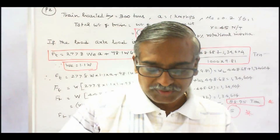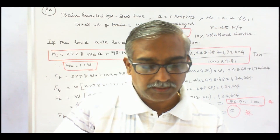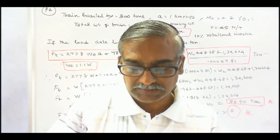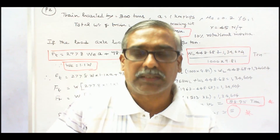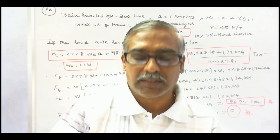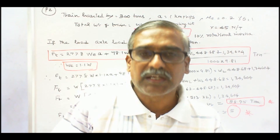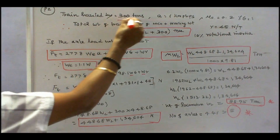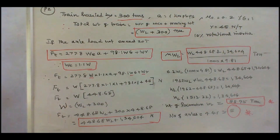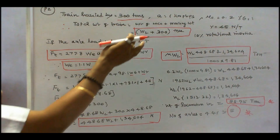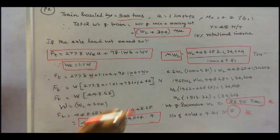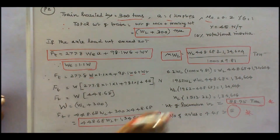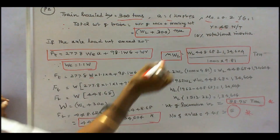Problem 3: A goods train weighing 300 tons is to be hauled by a locomotive up a gradient of 1% with an acceleration of 1 km per hour per second. Coefficient of adhesion is 20%, track resistance is 45 N per ton, and effective rotating mass is 10% of dead weight. If axle load is not to exceed 20 tons, determine the weight of the locomotive and number of axles. Total weight of train equals WL plus 300 tons, acceleration is 1 km/h/s, coefficient of adhesion is 0.2, percentage gradient is 1, train resistance is 45, and rotational inertia is 10%.